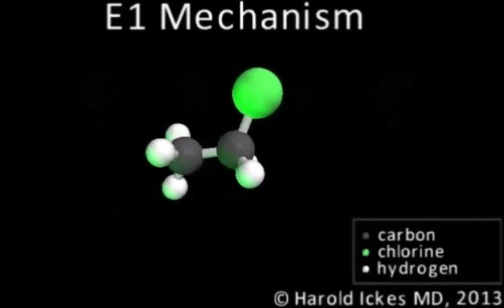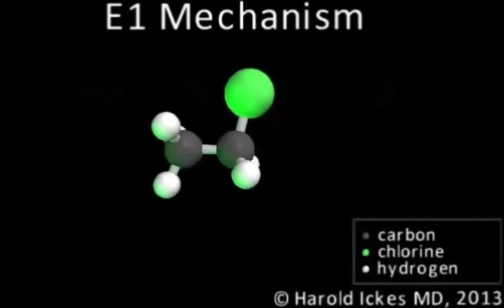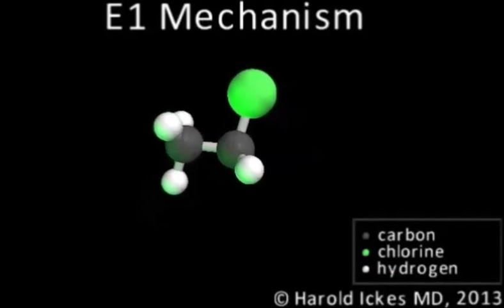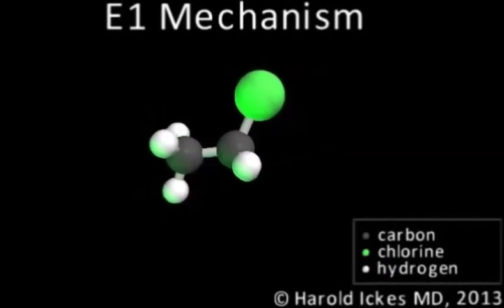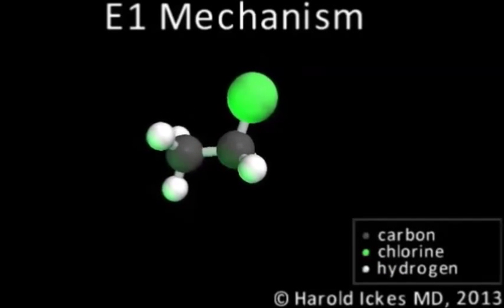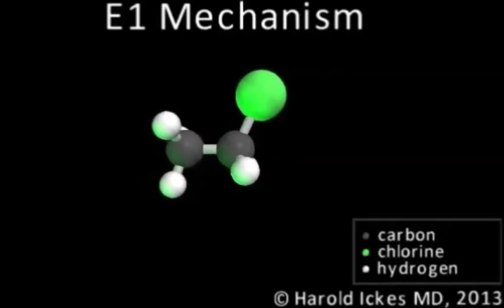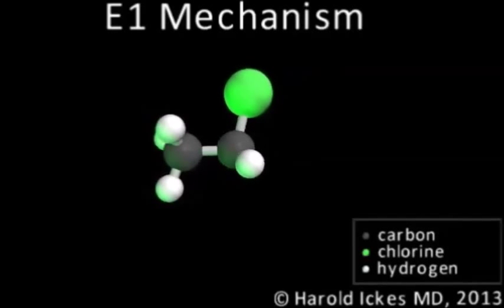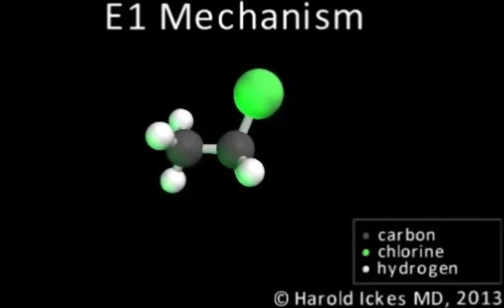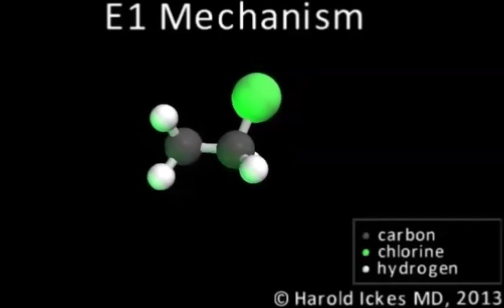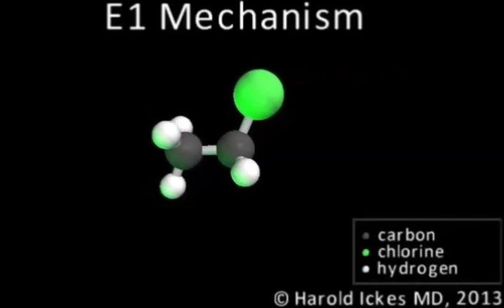Okay, so by now we know that E1 starts with the detachment of a leaving group. But can any carbon chain-leaving group combination begin the process? Well, let's try this chloroethane. It certainly looks like the chlorine could break free, in theory. Its bond is stretching, after all, but we would spend all day watching it fail to detach. As it turns out, chloroethane is a lousy candidate for the E1 mechanism.